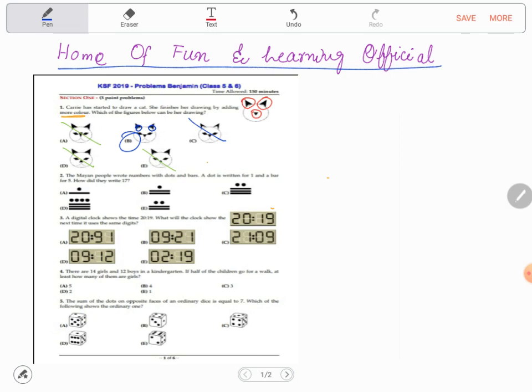Let's move on to the next question. The Mayan people wrote numbers with dots and bars. A dot is written for one and a bar for five. How did they write seventeen? Okay, so to make seventeen you will need 5 + 5 + 5 + 1 + 1, and that's it. That will be equal to seventeen.